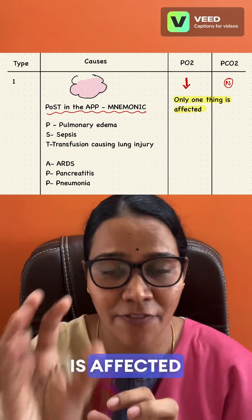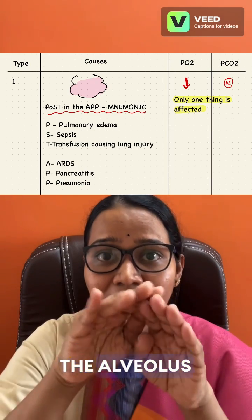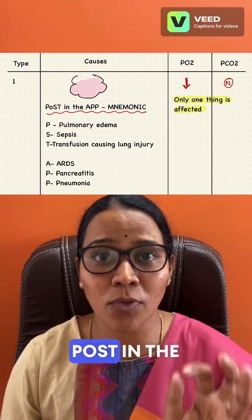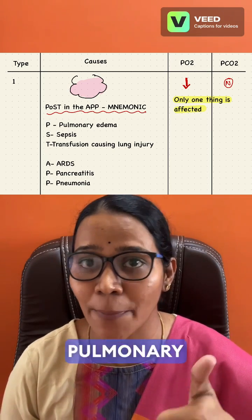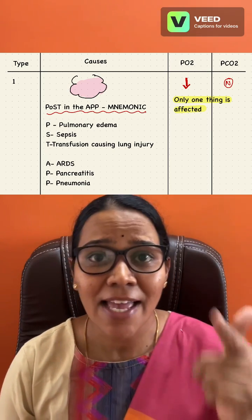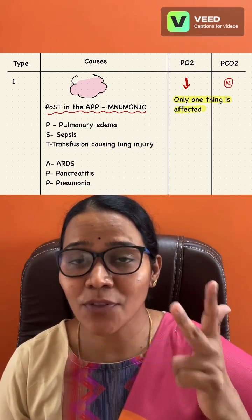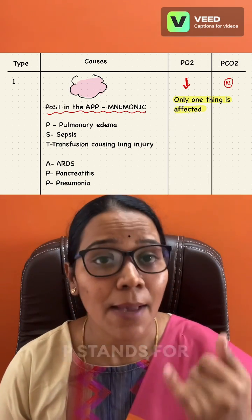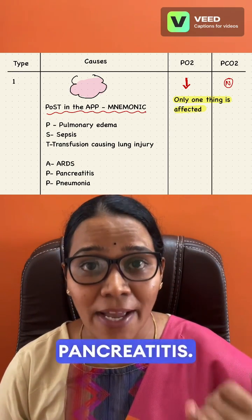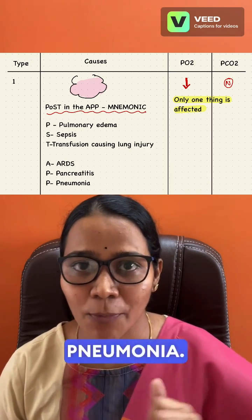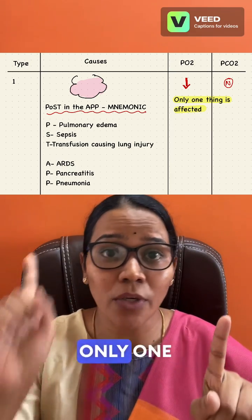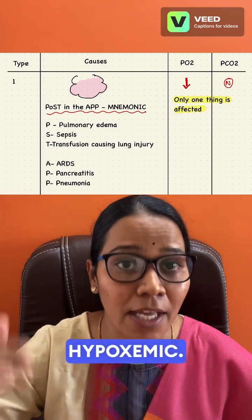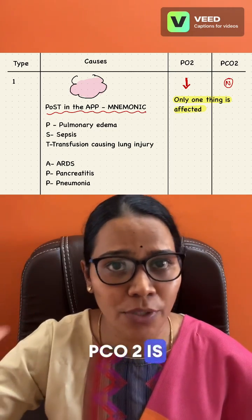Type 1 respiratory failure: the alveolus is affected and flooded. Causes are remembered with the mnemonic 'POST IN THE APP' — P: pulmonary edema, S: sepsis, T: transfusion-associated lung injury, A: ARDS, P: pancreatitis, P: pneumonia. In type 1, only PO2 is affected — it reduces (hypoxemic); PCO2 is normal.